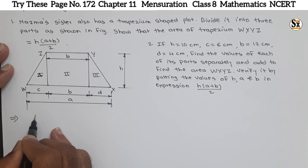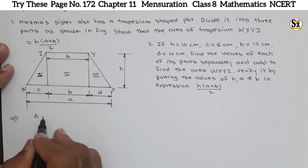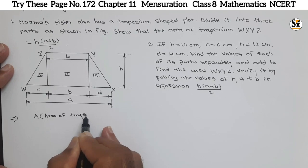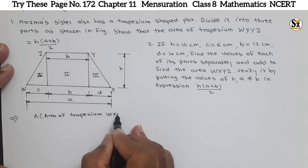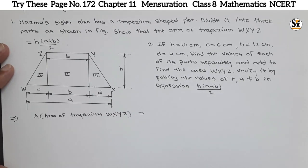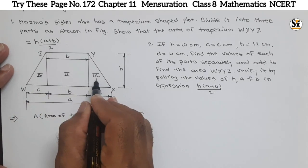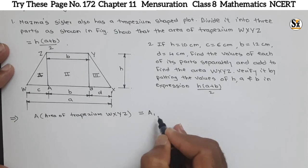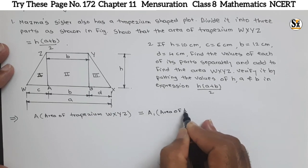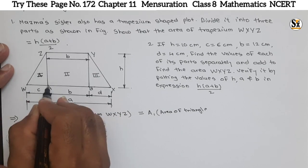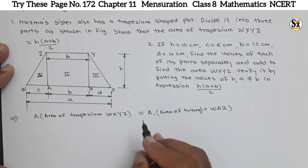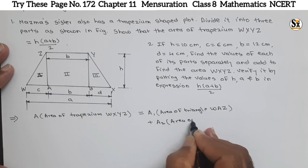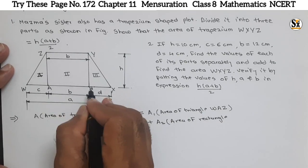The total area A of trapezium WXYZ will be equal to the area of the first triangle plus the area of the rectangle plus the area of the second triangle. So: A1, which is area of triangle WAZ, plus A2, which is area of rectangle ABYZ, plus A3, which is area of triangle BXY. If we add the area of these three figures, we get the total area of the trapezium.